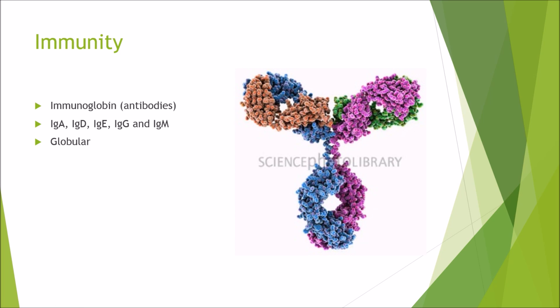You can also get immunity proteins. The most common immunity protein we have is immunoglobulin which are your basic antibodies. In a normal human being you get five different types: immunoglobulin A, D, E, G and M. As you can see they are globular in shape.